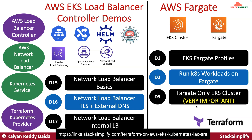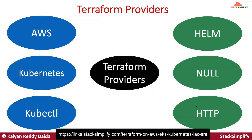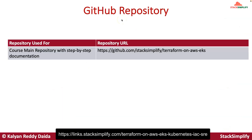The Terraform providers we will use as part of this entire automation are AWS, Kubernetes, kubectl, Helm, null, and HTTP — six providers used primarily across this overall project. This is the course GitHub repository where we have the step-by-step documentation and all the Terraform projects stored. Please make a note of this course GitHub repository.